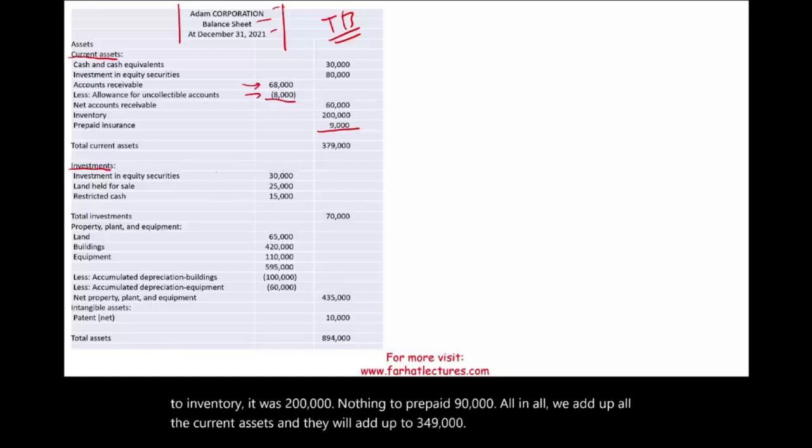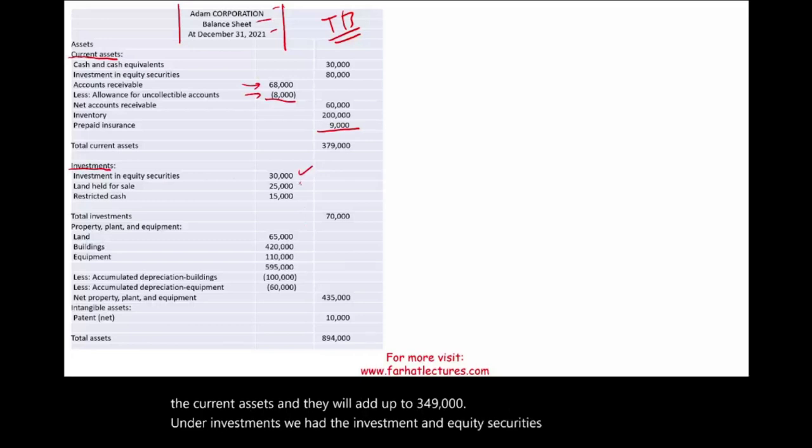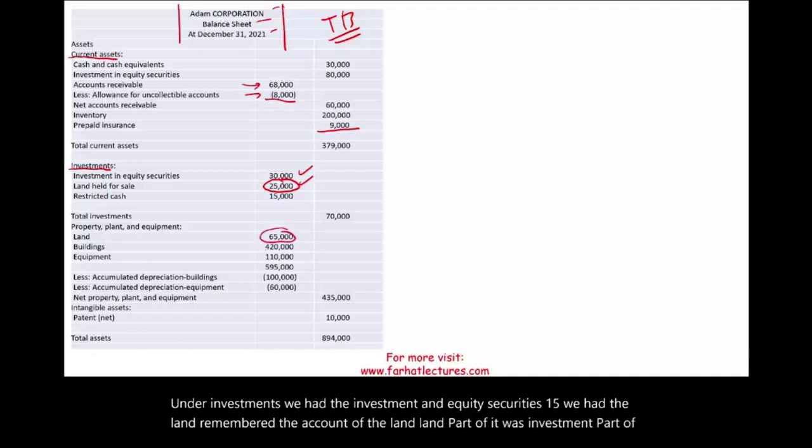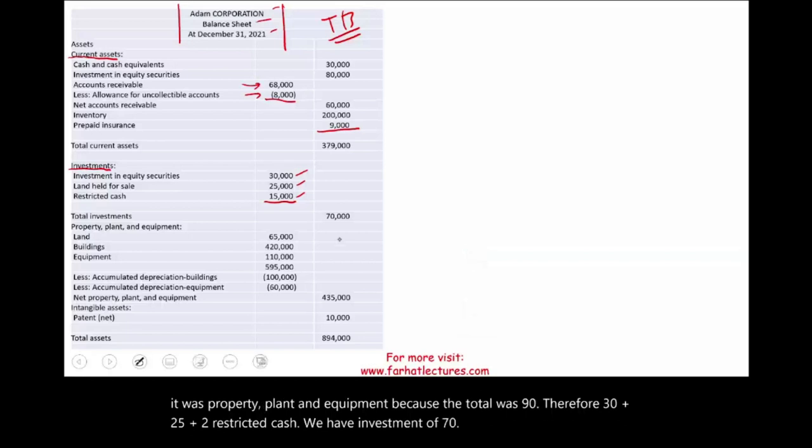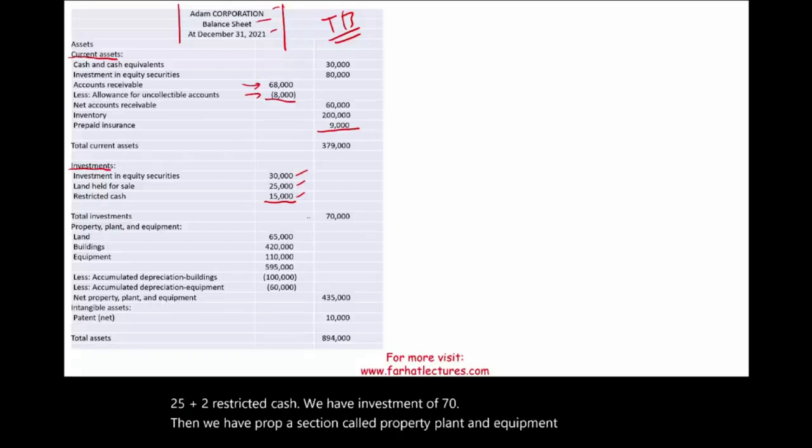Under investments, we had the investment in equity securities, $15,000. We had the land. Remember, the account of the land. Land, part of it was investment. Part of it was property, plant, and equipment because the total was $90,000. Therefore, $30,000 plus $25,000 plus the restricted cash. We have investment of $70,000. Then we have a section called property, plant, and equipment. So total investment is $70,000.